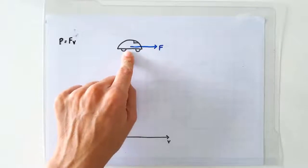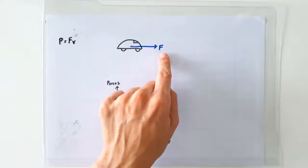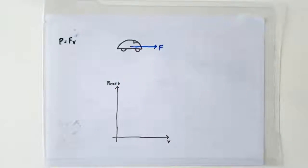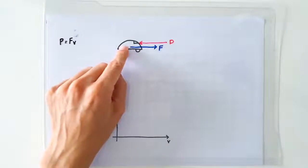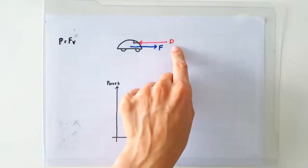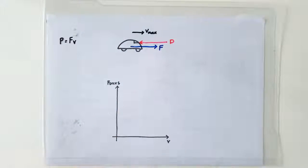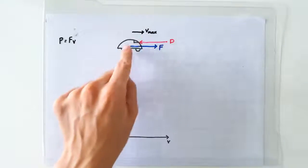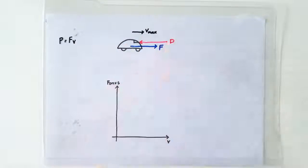This car has an engine that delivers a forward thrust F. The reason why the car cannot increase its speed indefinitely is because of the drag force D. In fact, at the maximum speed of the car, these two forces should be exactly equal.